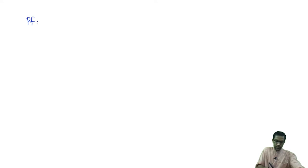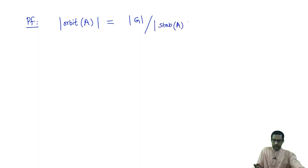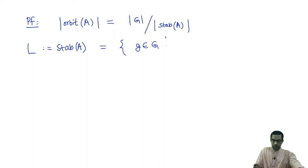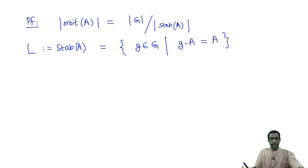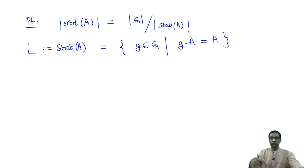Proof of claim. We use the counting formula: to understand how many elements are in a given orbit, we understand what the stabilizer looks like. Let L denote the stabilizer of A. It is a certain subgroup — the stabilizer is always a subgroup. It is the set of all group elements g such that g·A = A. When you act on A by g, you get back A; g can permute elements amongst A, but should not move any element of A outside A.